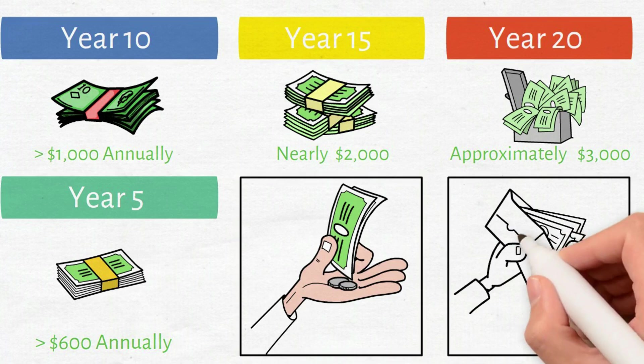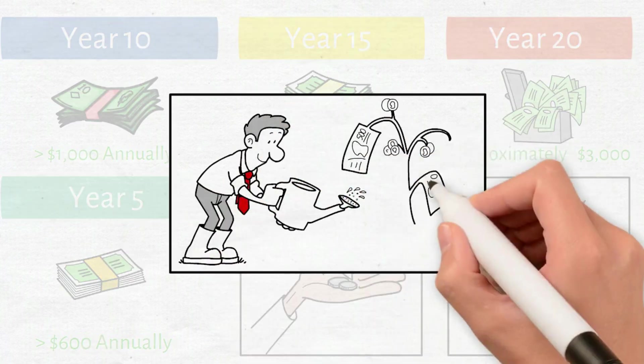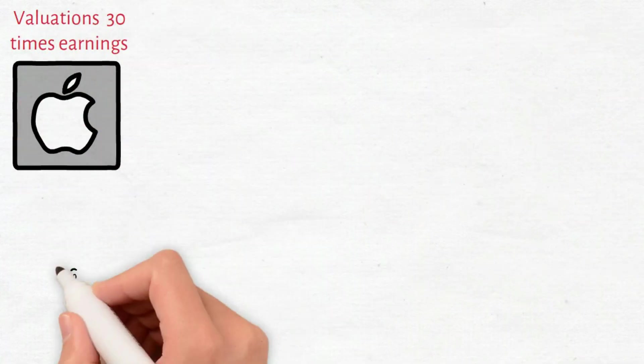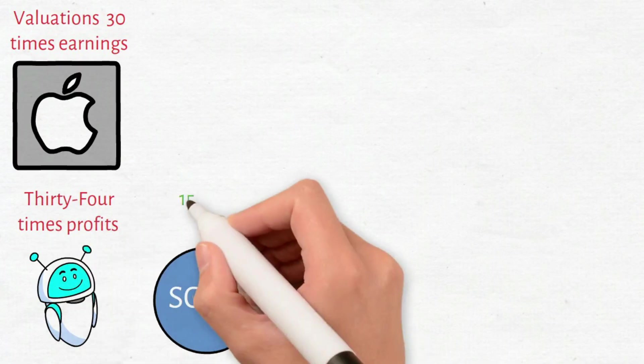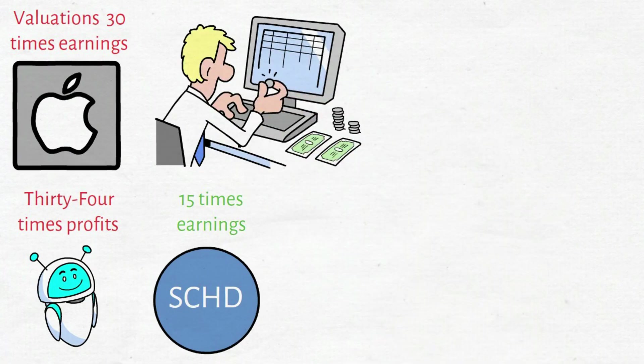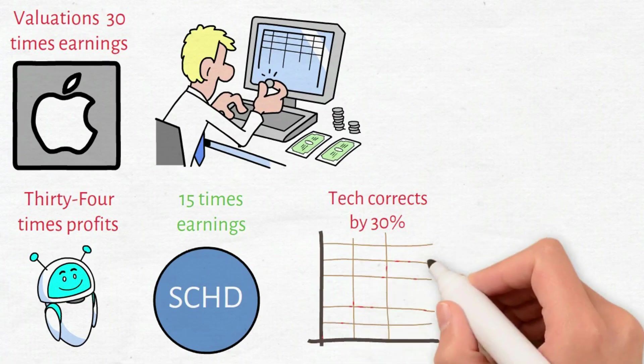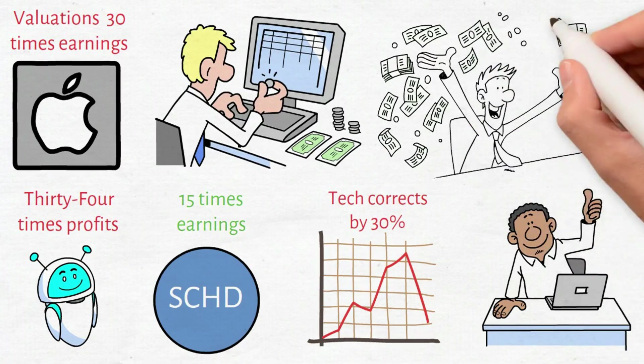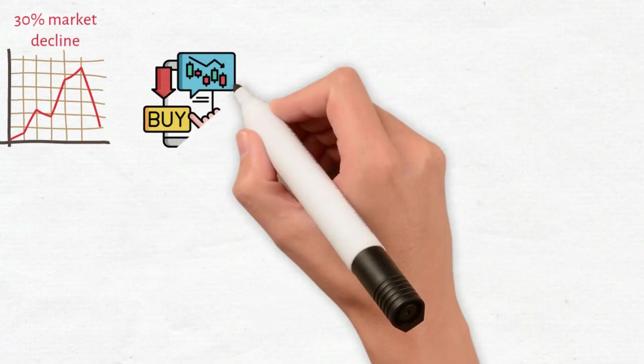The real wealth isn't the income you spend. It's what happens when you reinvest during market crashes. Tech stocks trade at valuations around 30 times earnings. AI companies average 34 times profits. SCHD's holdings average 15 times earnings. You're paying half the price for actual profits instead of promises. When tech corrects by 30%, and history guarantees corrections happen, SCHD holders don't panic. They get wealthier. A 30% market decline means your payouts purchase 30% more shares.